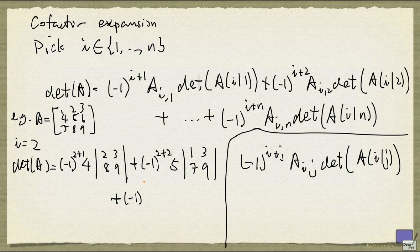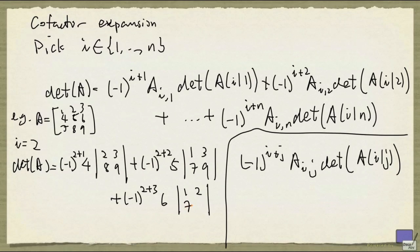And then finally, plus (-1)^(2+3) times A_23, and that's 6, and then multiply by the determinant of the matrix obtained from A by removing row 2 and column 3. And that's just 1, 2, 7, 8.